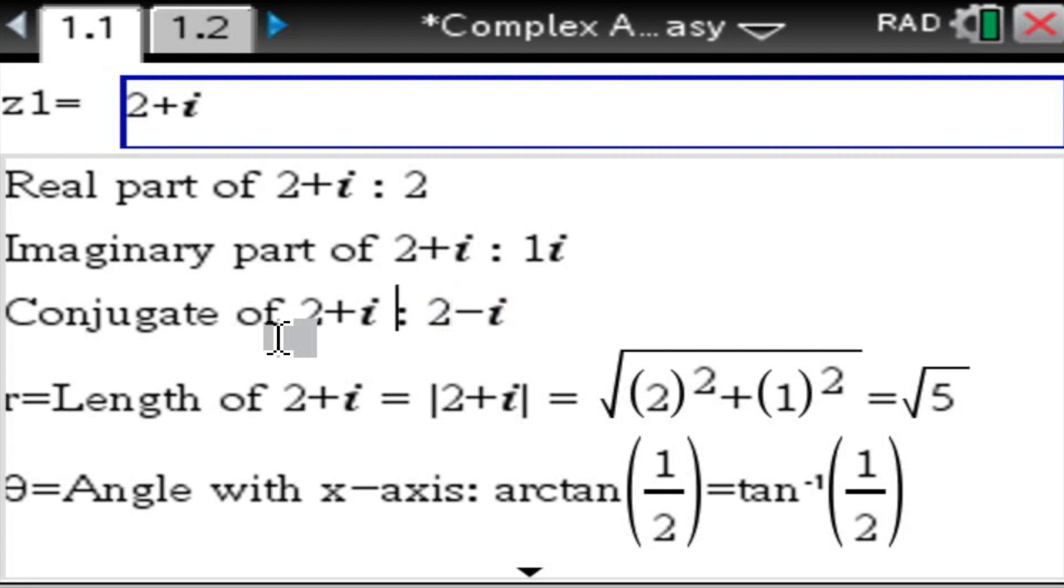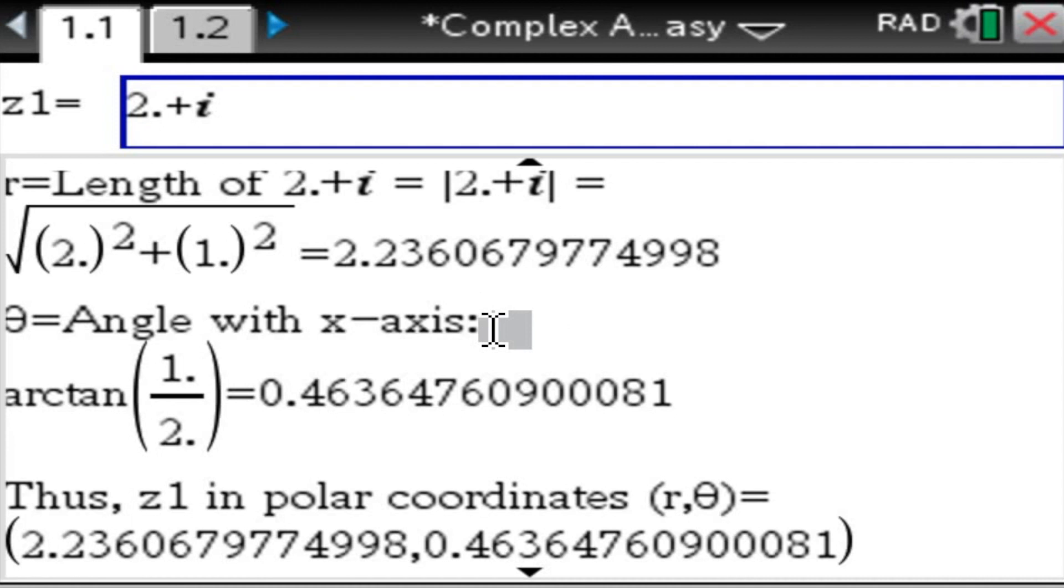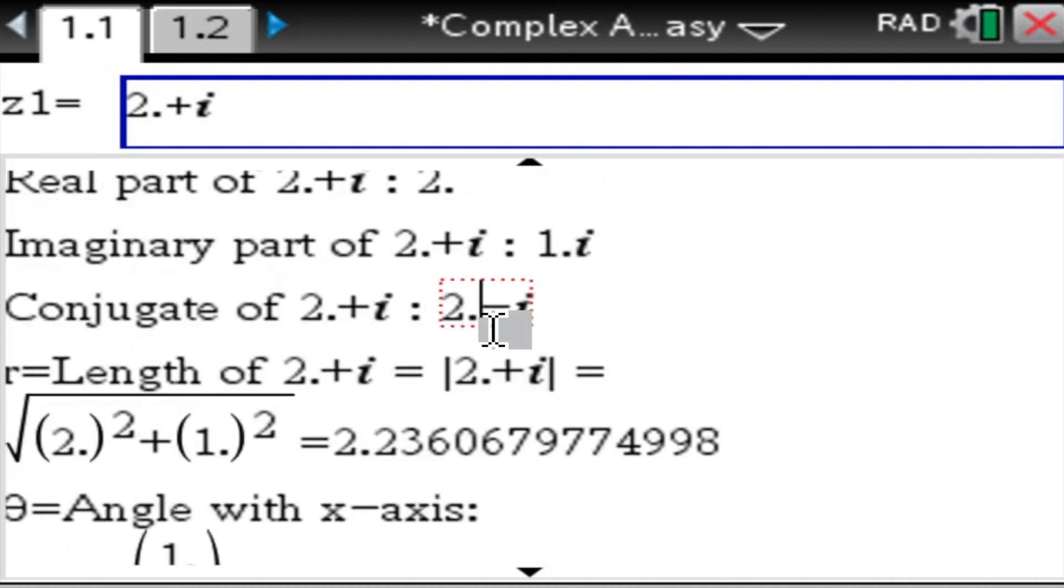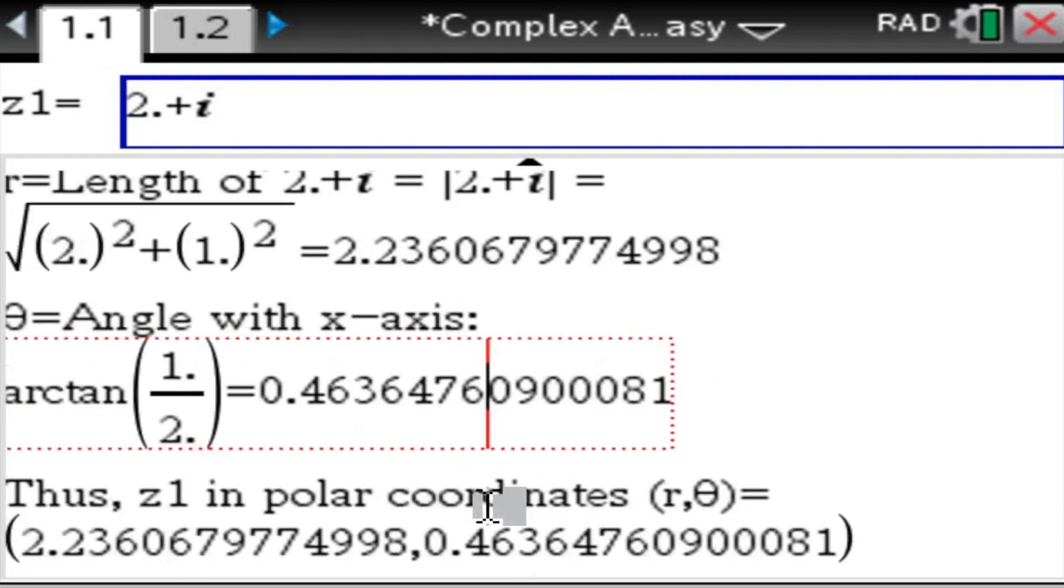The complex conjugate of 2 plus i is obviously 2 minus i. And the length of the 2 plus i complex number is root 5, which is computed here using Pythagorean theorem. And the angle is arctangent of one half. And if you like to have decimal answers, just turn the input decimal. You can see the root 5 is 2.236 and the angle in radian is 0.4636.